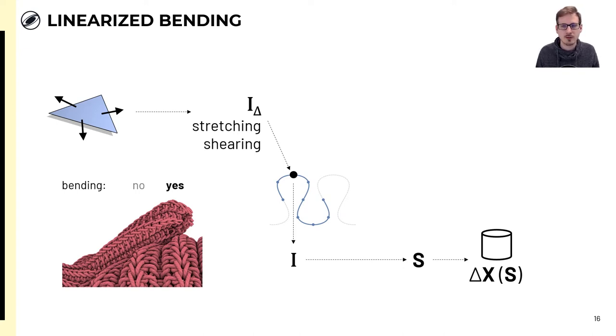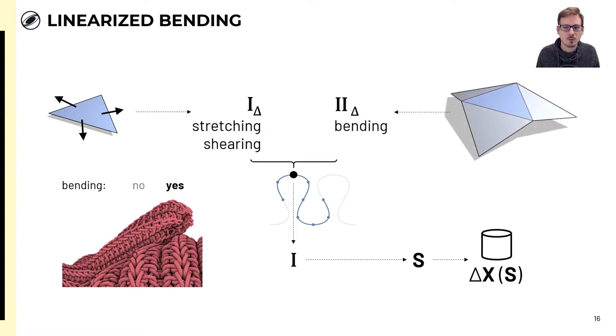Luckily, there's an approximation we can use that allows us to incorporate bending information while maintaining only planar deformations in the precomputation and lookup. In addition to the first fundamental forms, we also compute second fundamental forms that encode bending for each triangle, and similarly interpolate them to the yarn vertices. Then, there is a simple linearization, saying that we can compute a first fundamental form that depends on the height h of a vertex within its pattern, which modifies the first fundamental form by subtracting two times h times the second fundamental form. And from this, we compute s as before and interpolate our displacements.